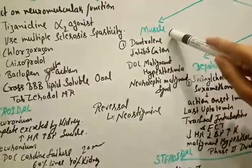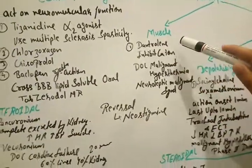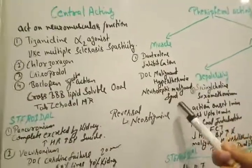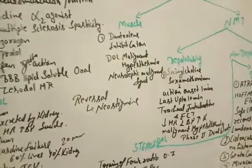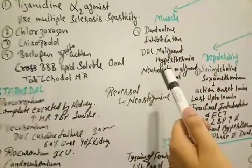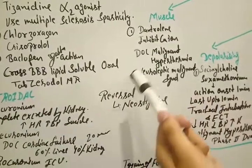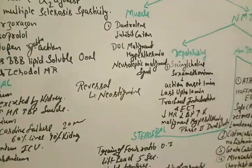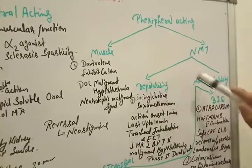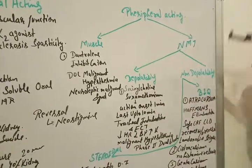It is dantrolene. Dantrolene inhibits the calcium ion and drug of choice in malignant hyperthermia and neuroleptic malignant syndrome. Dantrolene is not available in our India. Neuromuscular junction is divided into depolarizing and non-depolarizing neuromuscular junction.